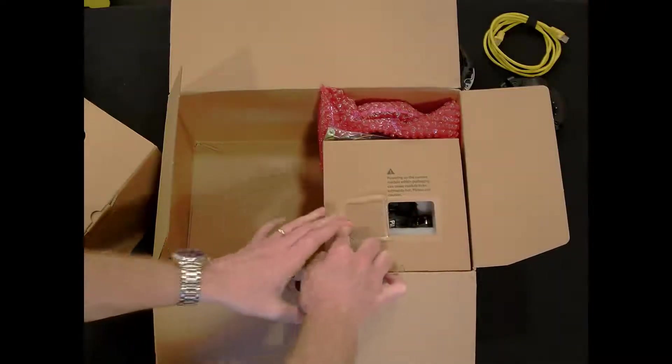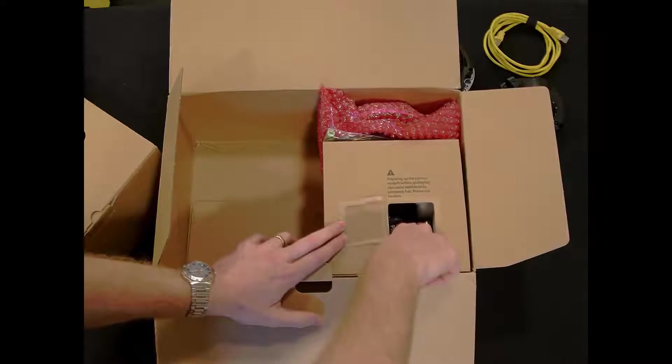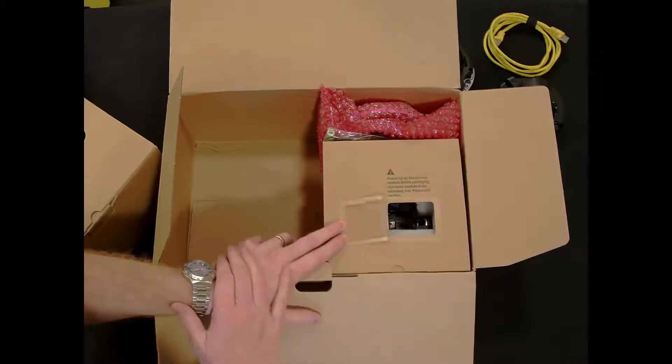We can peel back this cover, and you'll see the network jack is exposed. We can plug in a network cable right here to be able to stage and prep the camera, configure IP addresses, things like that.